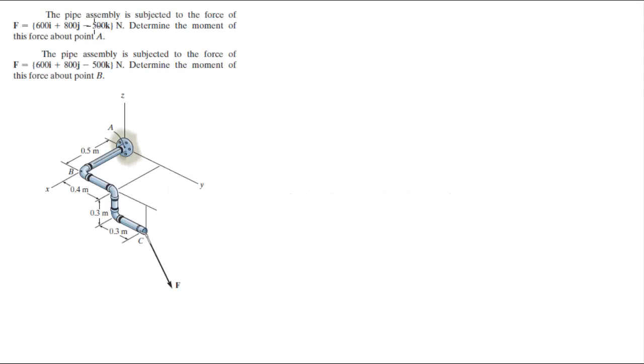now we're going to do these two problems where the pipe assembly is subjected to this force F. Find the moment about A and then they want you to find the moment about B. So basically we're going to find all the points involved. So we're going to do this part first.